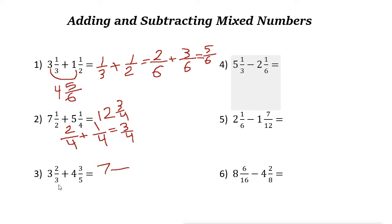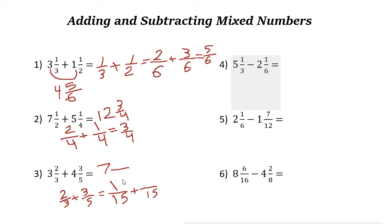Next one: three plus four is seven. Now add the fractions two-thirds plus three-fifths. To add these, we need a common denominator, which is fifteen (three times five). We change two-thirds to ten over fifteen (two times five), and three-fifths to nine over fifteen (three times three). Ten plus nine gives nineteen over fifteen.